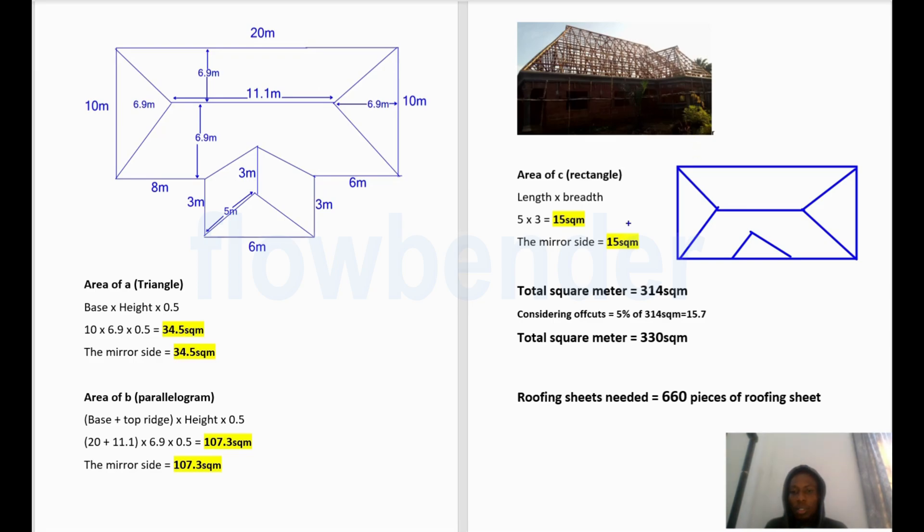So because in Nigeria, we sell two sheets as a square meter. So when you have a 330 square meter calculation, you want to multiply it by two to give you the total pieces of roofing sheet you need. Thanks for watching. In the next video, I'll be showing you how to calculate the square meter of your roof without having to go through all this calculation. So I'll see you in the next video.